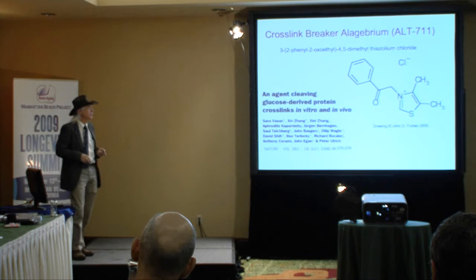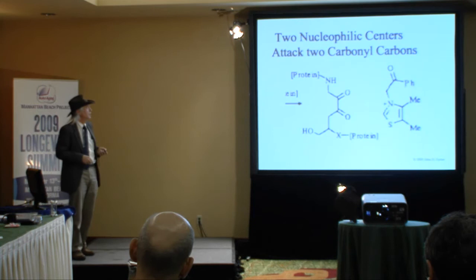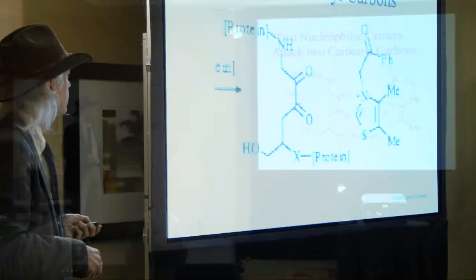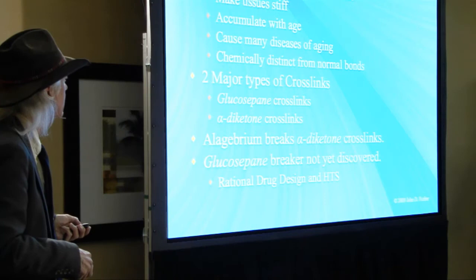Here is the cross-link — an abbreviated version — and you can see the two ketone carbon atoms and two catalytic carbon atoms on the Alagebrium cross-link breaker. They interact and separate the cross-link, restoring flexibility, at least for that particular kind of cross-link.